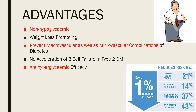Advantages of metformin: it is non-hypoglycemic and weight-loss promoting, with potential to prevent macrovascular as well as microvascular complications of diabetes. There is no acceleration of beta cell exhaustion or failure in type 2 diabetes. The anti-hyperglycemic efficacy results in a reduction in glycated hemoglobin (HbA1c) by 0.8 to 1.2%.